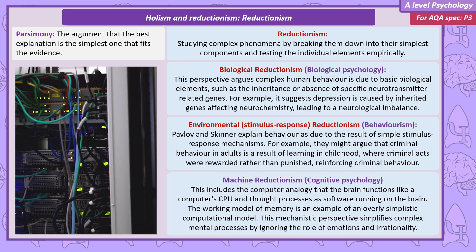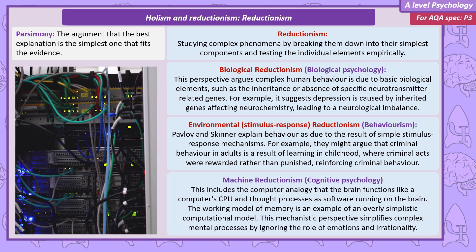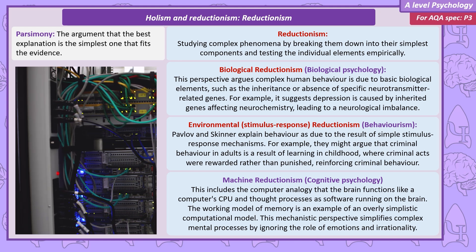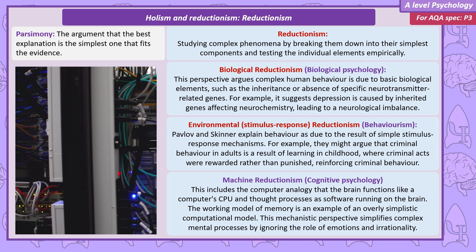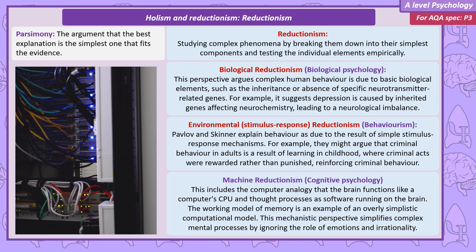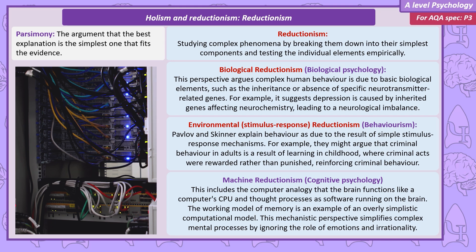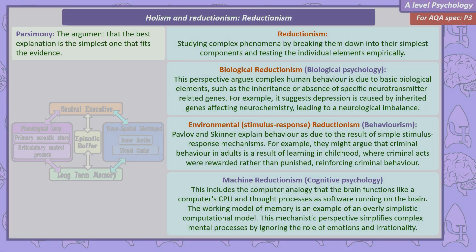Cognitive psychology's explanations are not quite as simplistic, but we can talk about machine reductionism. This includes the computer analogy — how cognitive psychologists explain the brain as working like the CPU of a computer, and mental processes as like the software that runs on the brain. The computer analogy, along with explaining processes as complex as human memory with mechanistic theoretical models like the working model of memory, is reductionist. There is, of course, an alternative to reductionism.